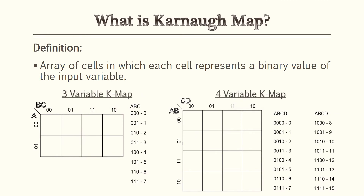For this lesson we'll be going over Karnaugh maps, also known as K-maps. K-maps are an array of cells in which each cell represents a binary value of the input variables. Shown below I have a three variable K-map and a four variable K-map. You can do K-maps with five variables, however I will not be going over those in these lessons due to time constraints.